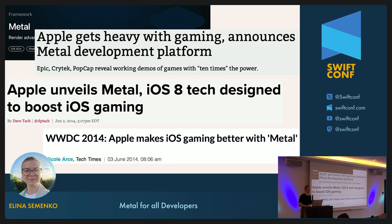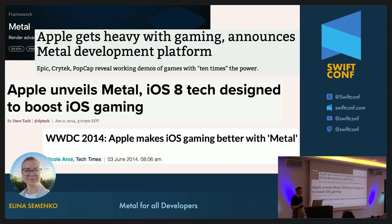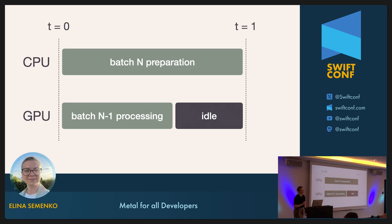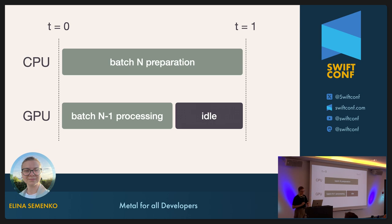As gaming requires lots of graphics rendering, introducing Metal was the first step away from old GPU frameworks and standards, which had longstanding issues and were not optimized for Apple's hardware. The CPU and the GPU always work in tandem: the CPU prepares commands and sends them to the GPU, while the GPU is processing. But this batching and sending of commands is expensive in terms of time, and often the CPU is unable to send enough work to keep the GPU busy — so the GPU sits idle.